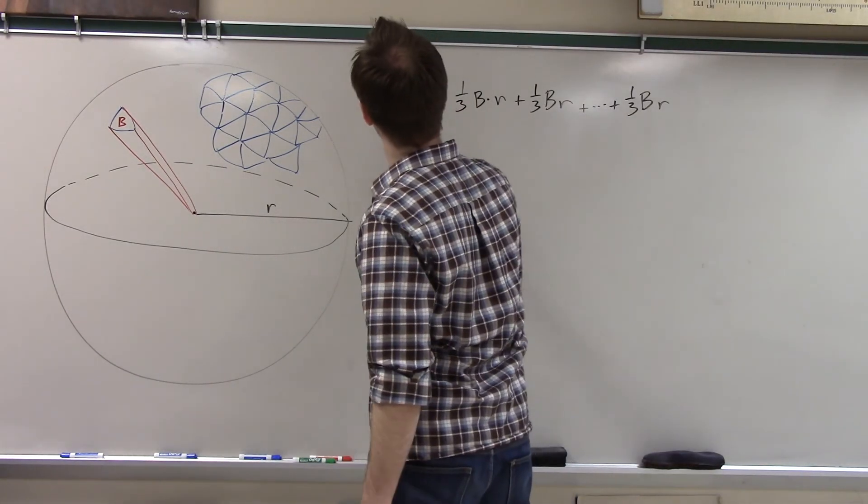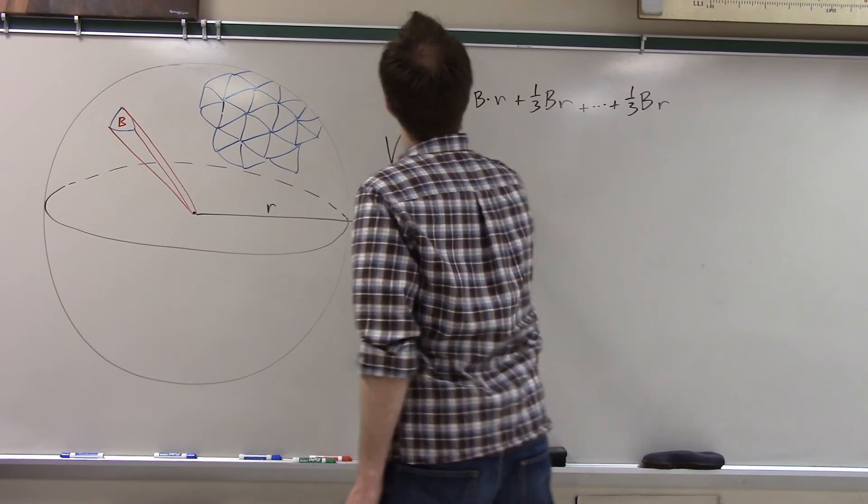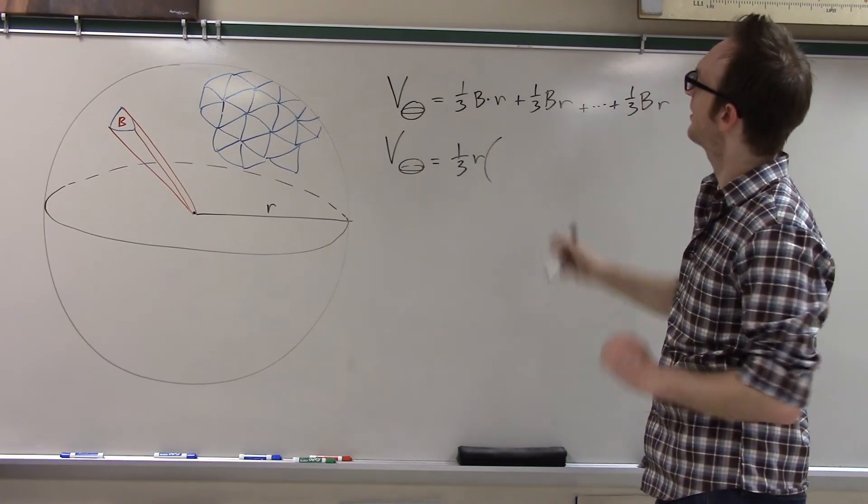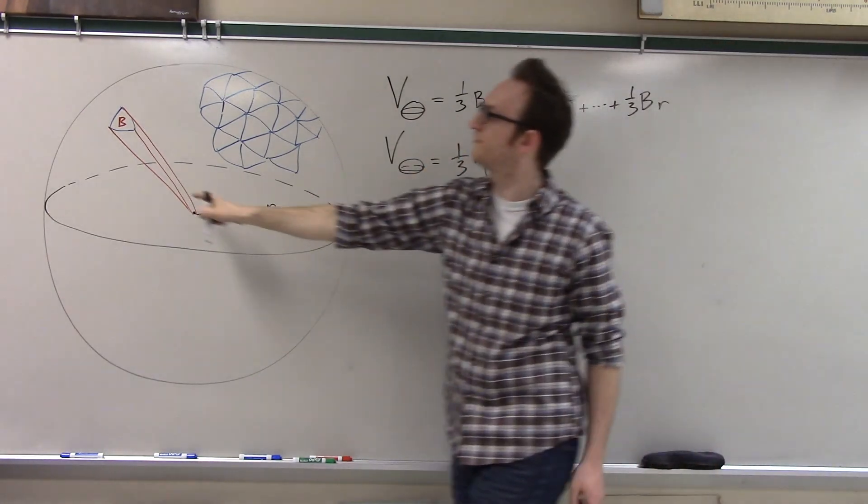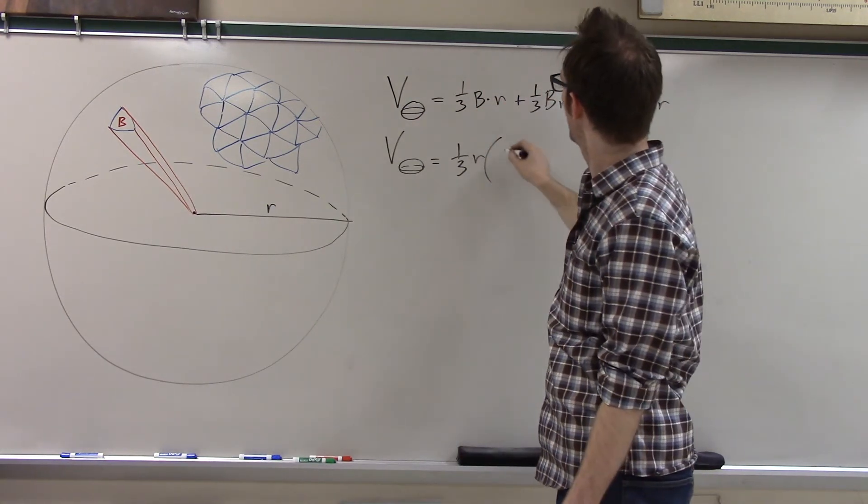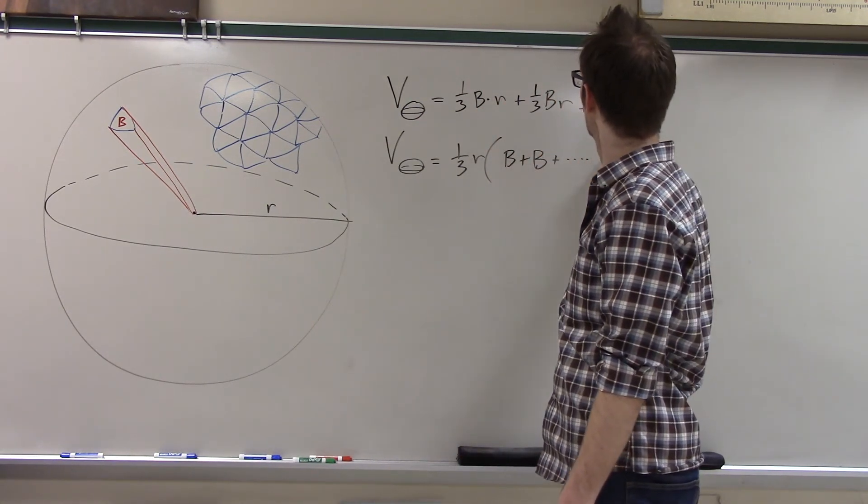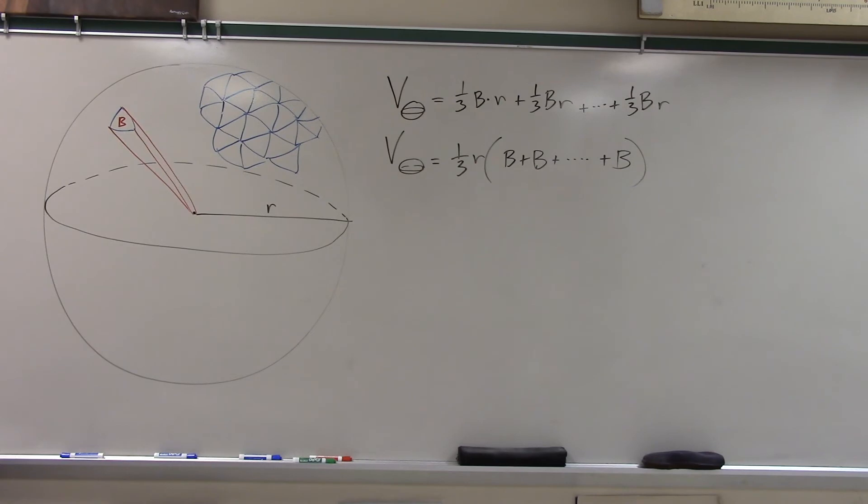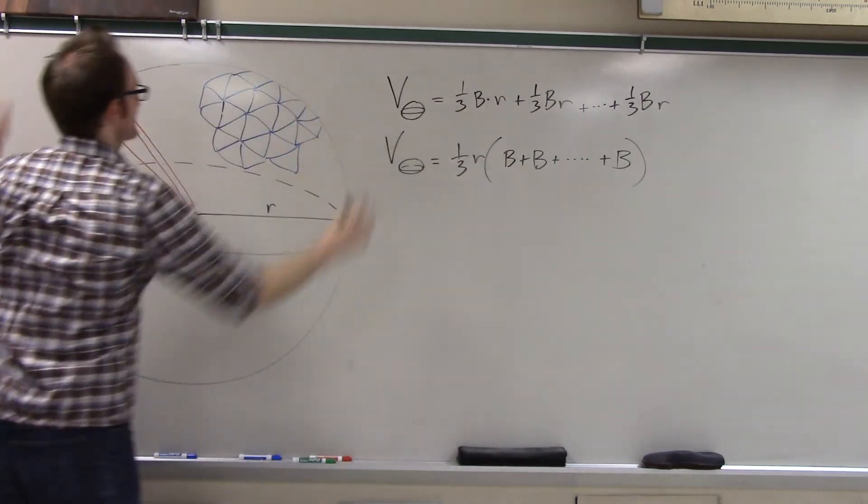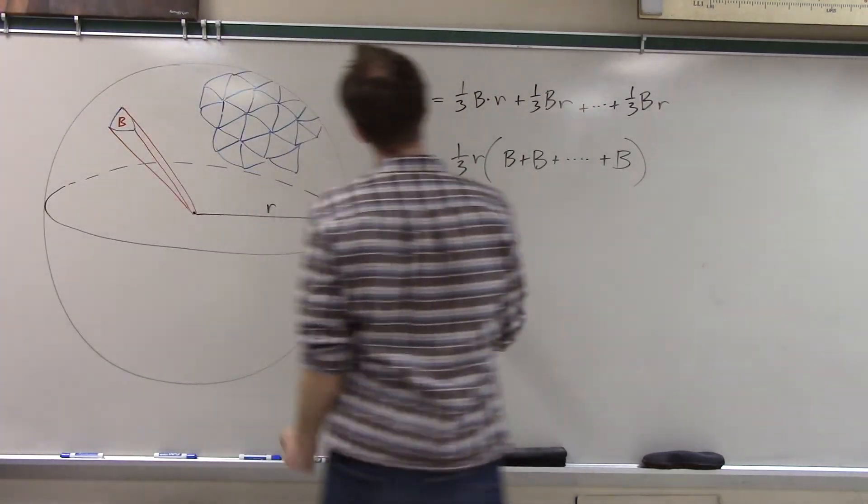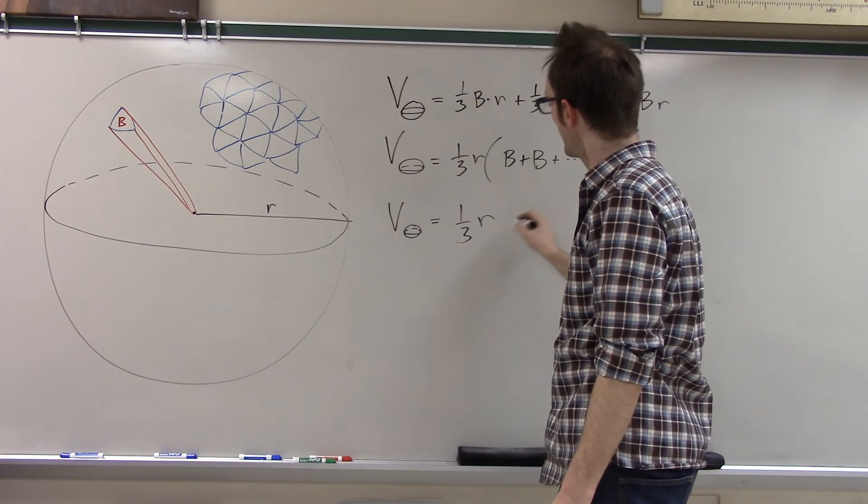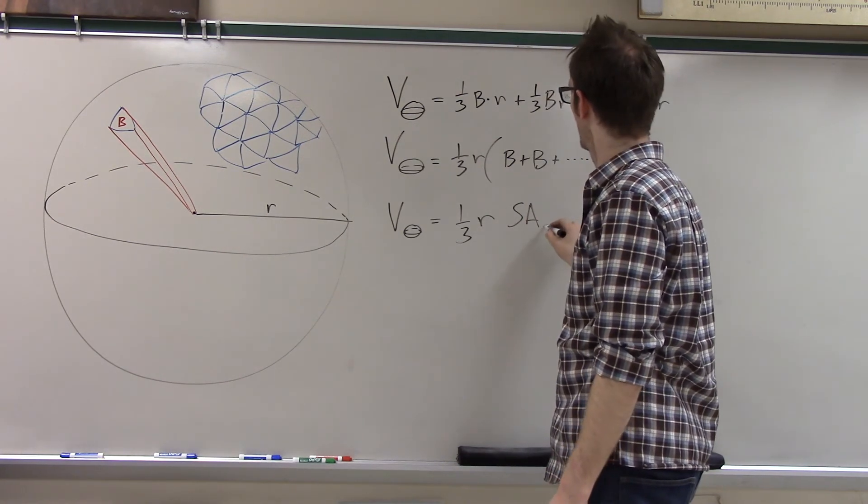Well, now what I'm going to do is just factor. I'm going to factor out a one-third r. And if I factor out a one-third r, each of these expressions, which individually represent the volumes of these triangular prisms, then I get B plus B plus, I get a lot of Bs. Well, what is the sum of the areas of all of those bases, of all of those curvy triangles? Well, they completely tessellate the sphere. So that is, in fact, just the surface area of the sphere. And so we have that the volume of the sphere is one-third times r times the surface area of the sphere.